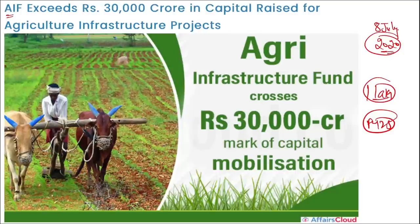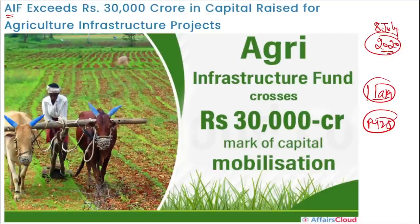AIF allows convergence with all schemes of the Union or state government. Infrastructure projects help farmers get better prices for their produce, access modernized agriculture technology and equipment, and reduce post-harvest losses. Just as better technology gives better output, farmers with better infrastructure and equipment will see greater growth and fewer post-harvest losses.